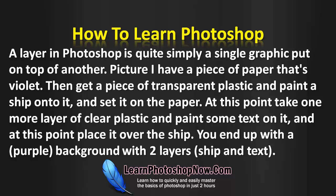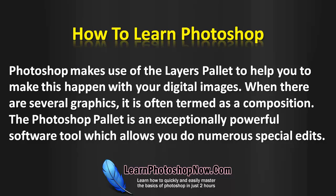A layer in Photoshop is quite simply a single graphic put on top of another. Picture having a piece of paper that's violet, then get a piece of transparent plastic and paint a ship onto it and set it on the paper. Then take one more layer of clear plastic, paint some text on it, and place it over the ship. You end up with a purple background with two layers: ship and text. Photoshop makes use of the layers palette to help you make this happen with your digital images. When there are several graphics, it is often termed a composition.